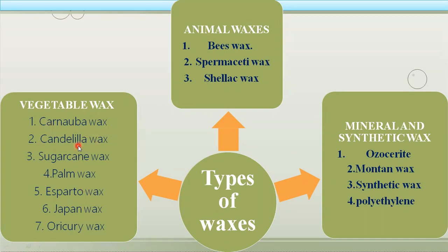In vegetable waxes there are a number of waxes: carnauba wax, candelilla wax, sugarcane wax, palm wax, etc. Carnauba wax is obtained from the carnauba tree, and candelilla wax is obtained from candelilla leaves — these vegetable waxes come from particular plants. Then there are mineral-based and synthetic waxes, which include ozocerite, mountain wax, synthetic wax, and polyethylene — these are obtained from petroleum-based sources.